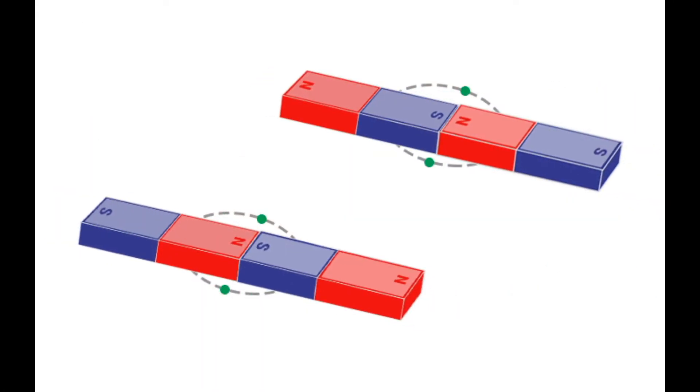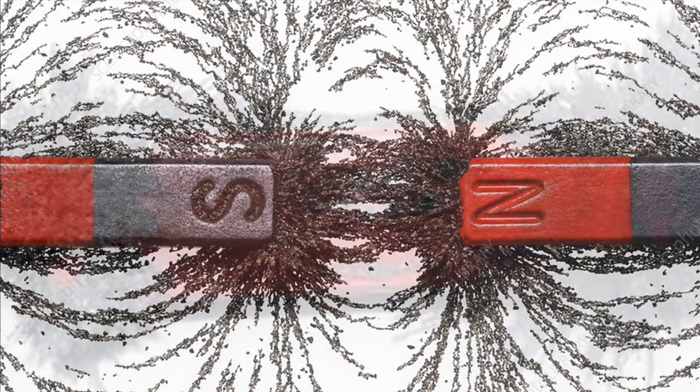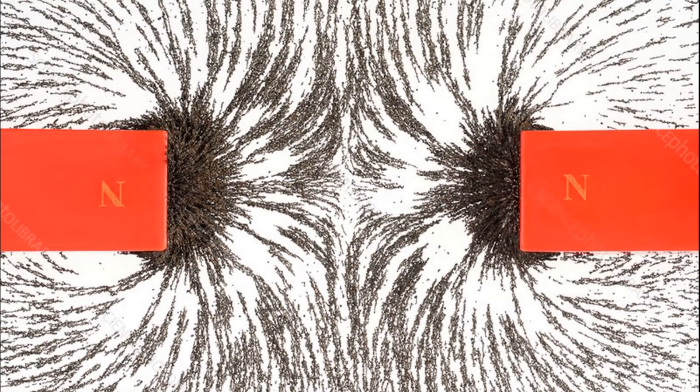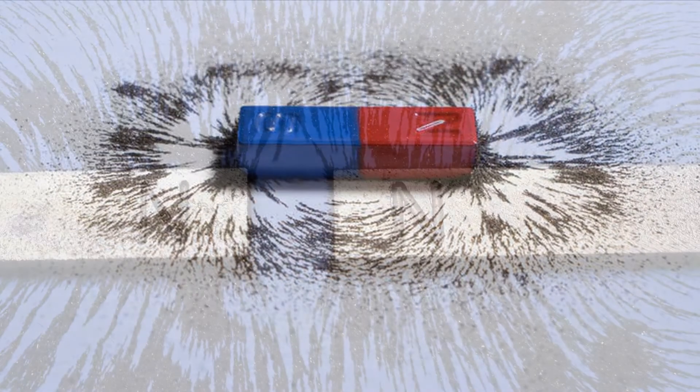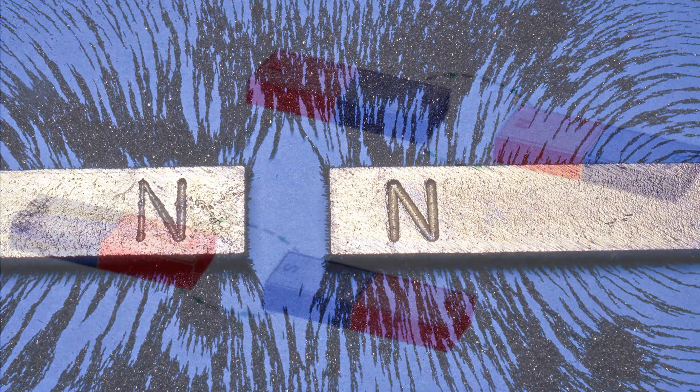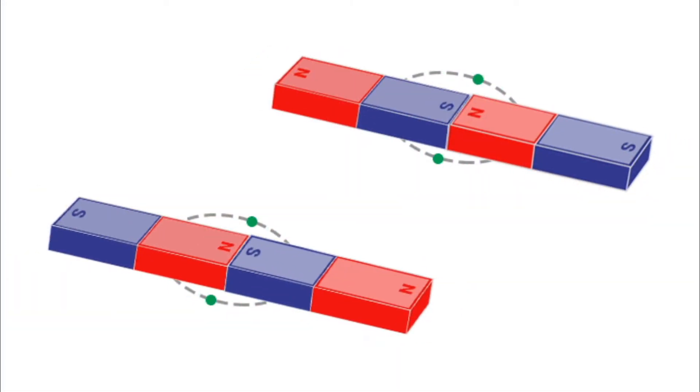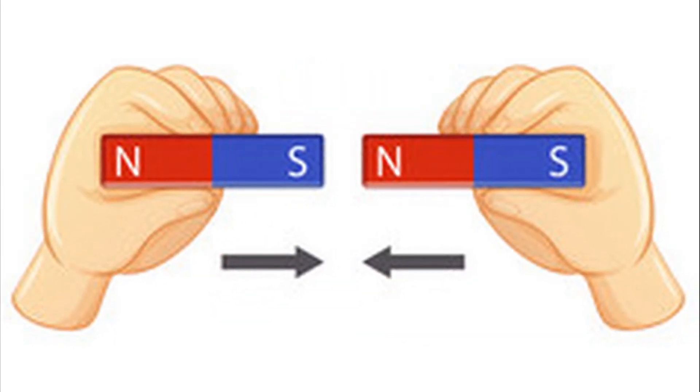This law can also be demonstrated by using two bar magnets and some iron fillings. The poles of the magnet are dipped into the iron fillings. A cluster of fillings stick to the ends of each magnet. When the like poles of the two magnets are brought close to each other, the fillings are seen to push away from each other. When the unlike poles are brought together, the fillings cling to each other so strongly that it is hard to pull them away from each other.